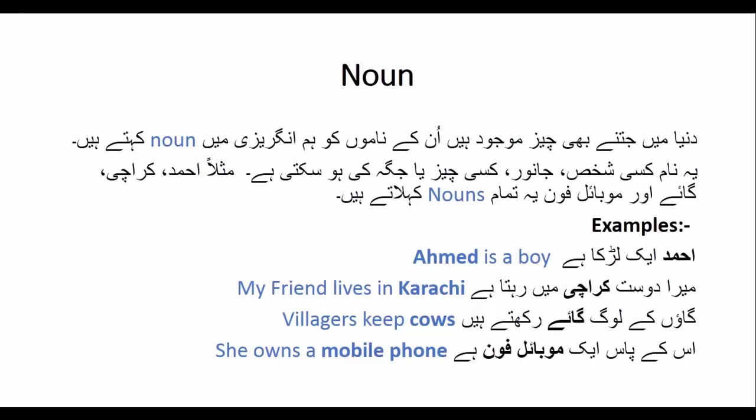اگر ہم صحیح معنی میں ناؤن کو سٹڈی نہیں کریں گے تو ہم انگلیش صحیح معنی میں سیکھ نہیں سکیں گے۔ مثال: احمد is a boy — اس سنٹینس میں احمد ناؤن ہے۔ اسی طرح my friend lives in Karachi — اس فقرے میں کراچی ایک ناؤن ہے کیونکہ یہ بولڈ ورڈ ہے۔